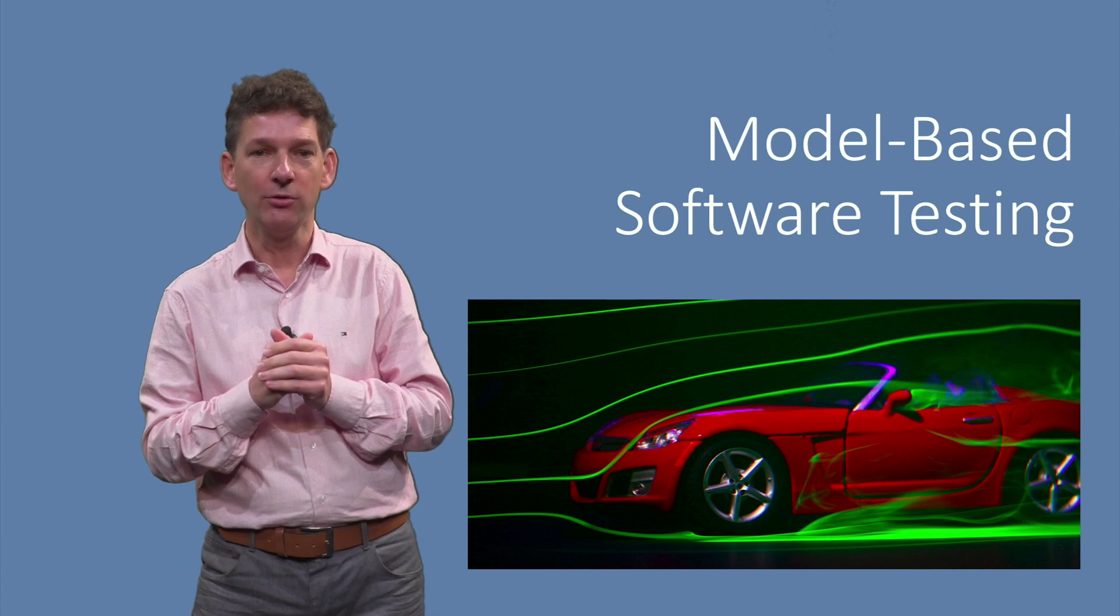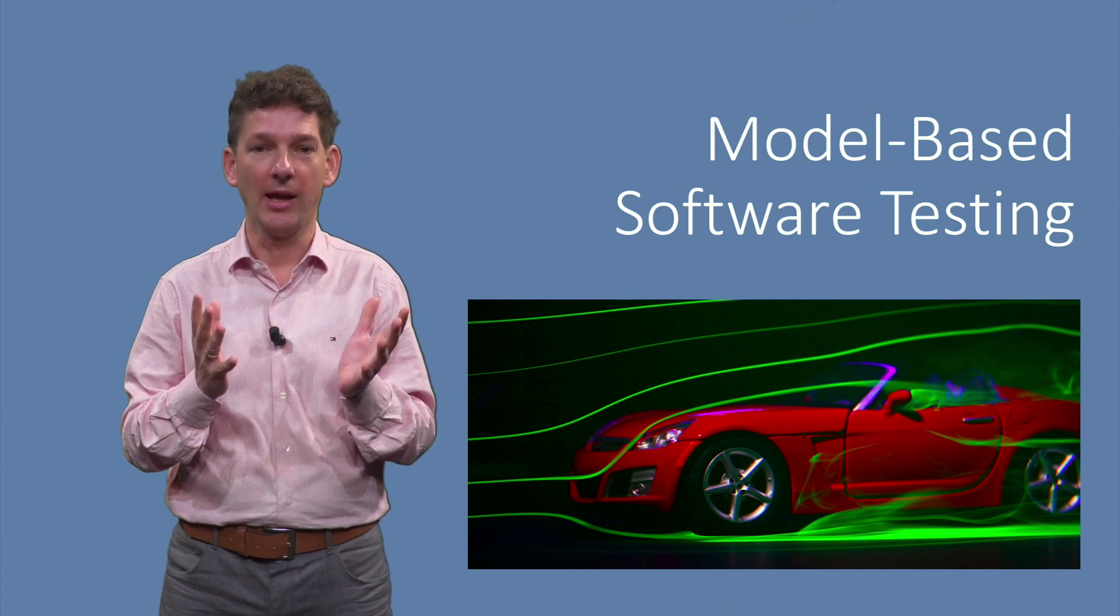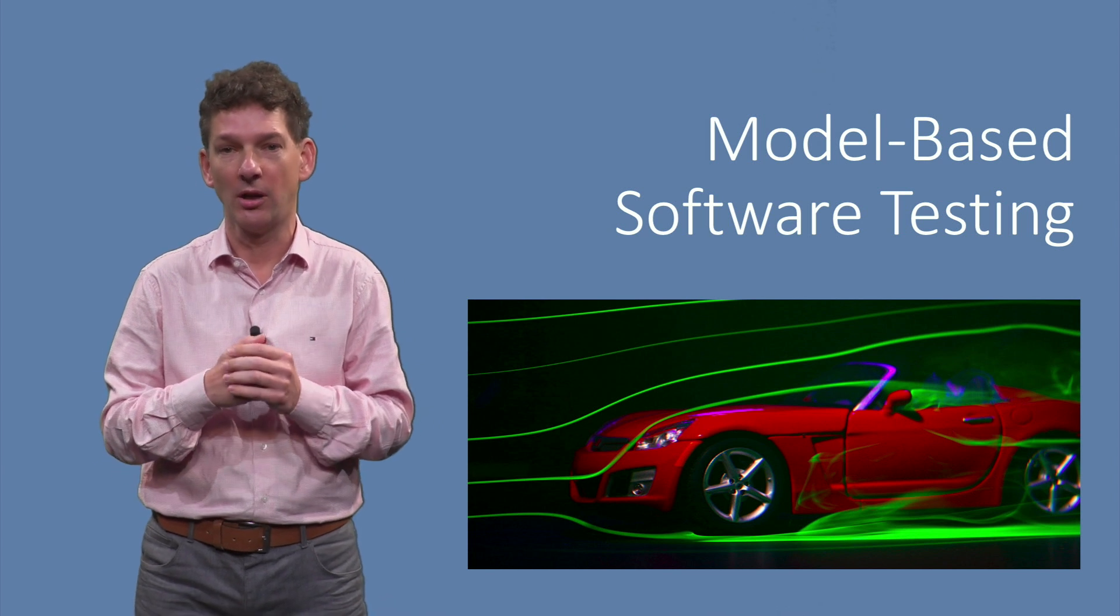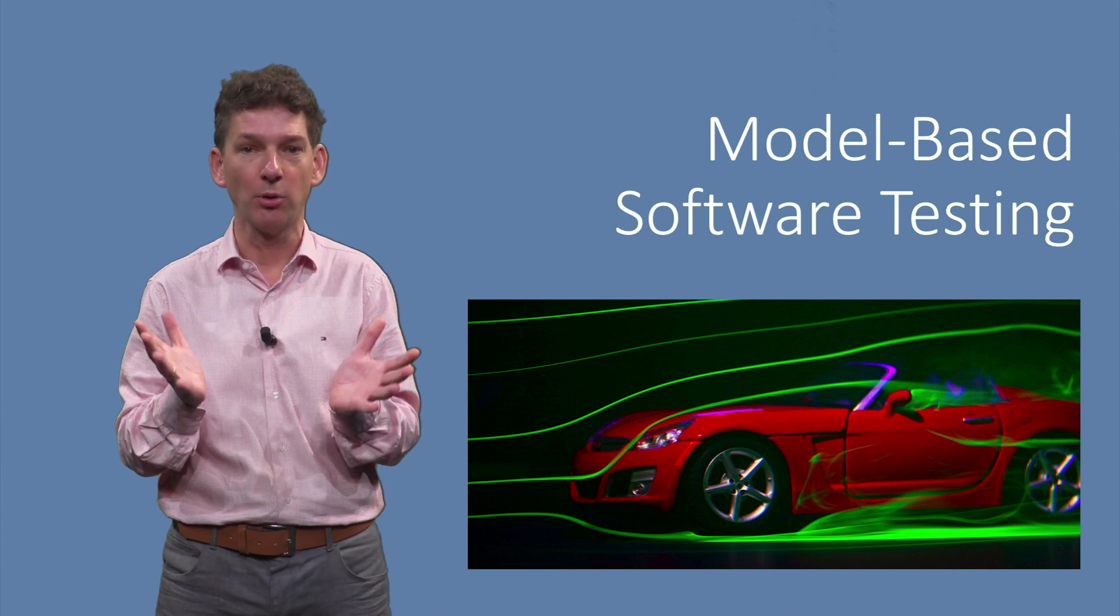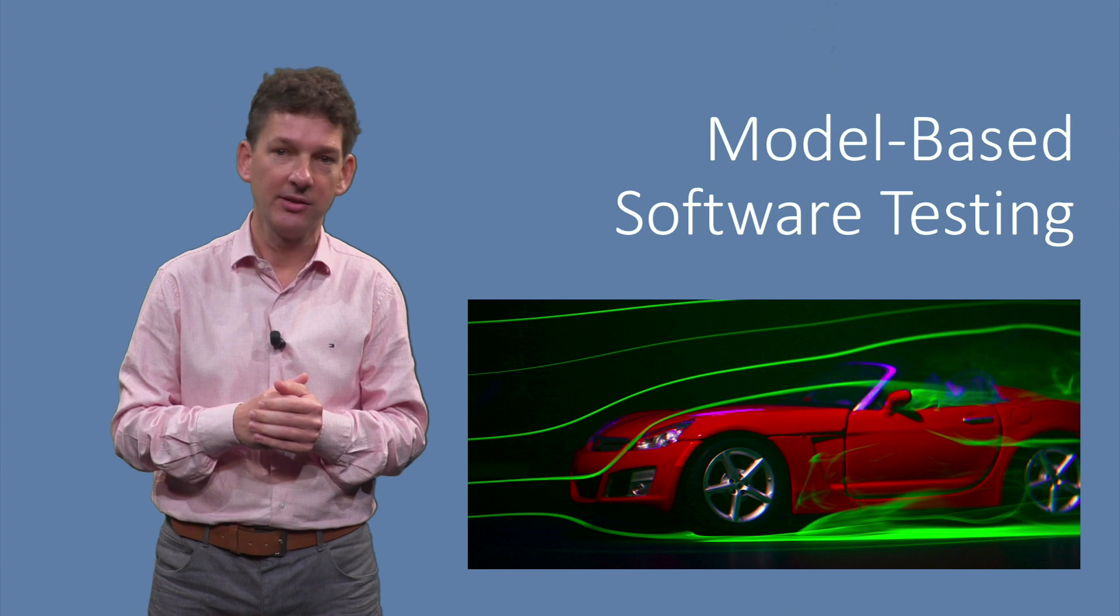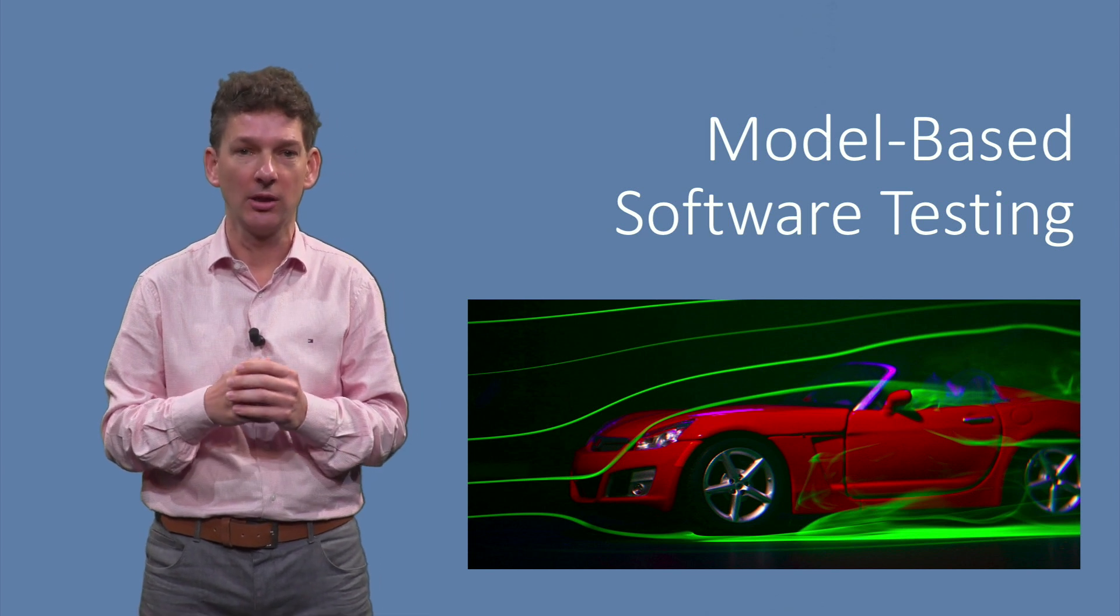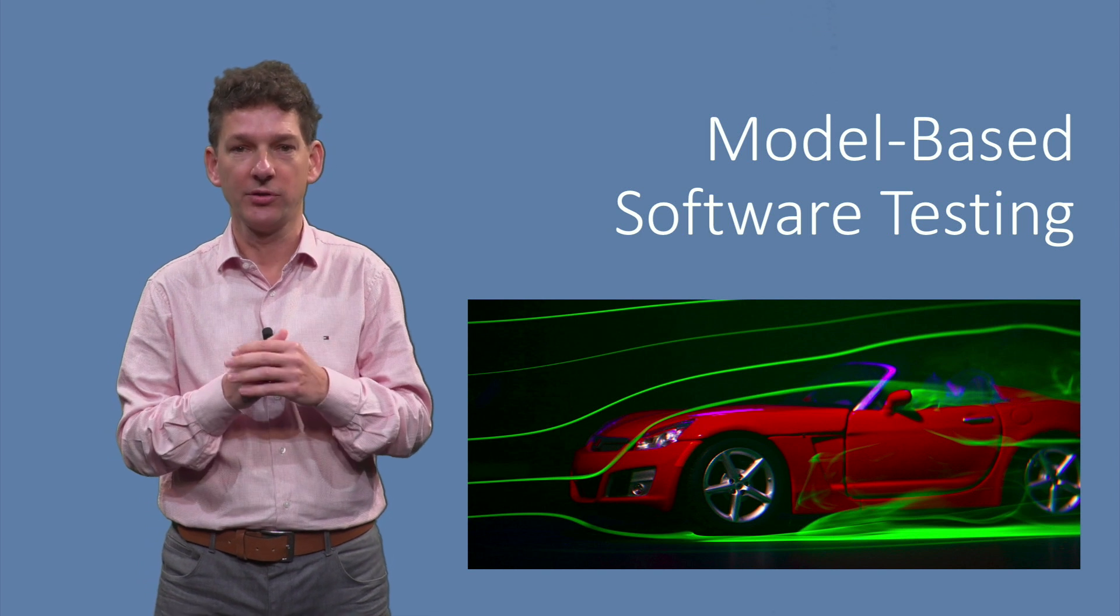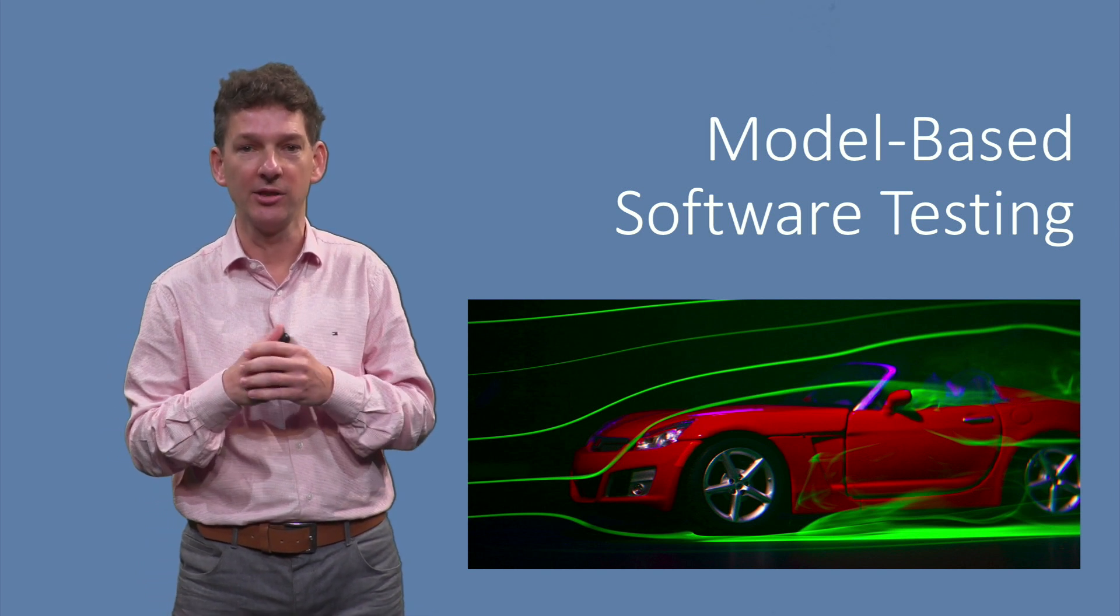Models are widely used in engineering in general. As an example, the car industry uses physical models of cars to test a car's aerodynamic properties. The car tested is a simplification of a real car. It may not even have an engine, but it preserves the properties needed to analyze its aerodynamics.